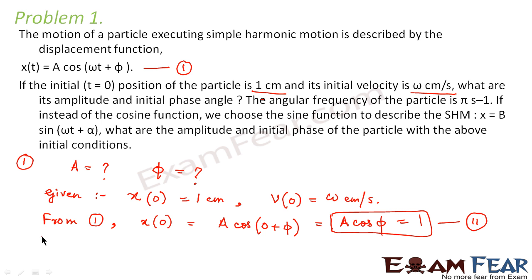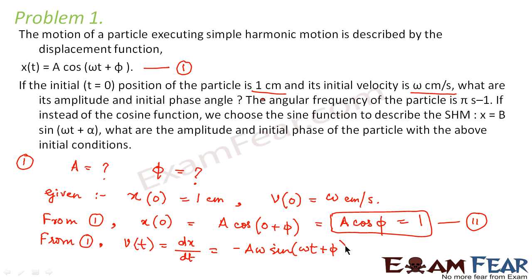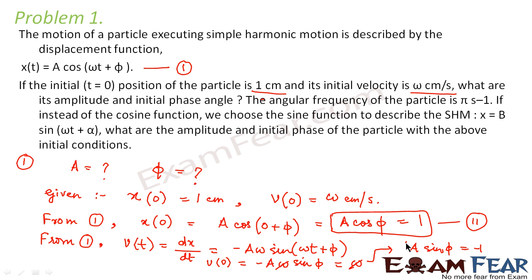Similarly, from equation 1, let us calculate velocity. Since displacement x(t) is given, velocity v(t) = dx/dt = −Aω sin(ωt + φ). At t = 0, v₀ = −Aω sinφ. This equals ω according to the question, so ω cancels and we get A sinφ = −1. We call this equation 3.